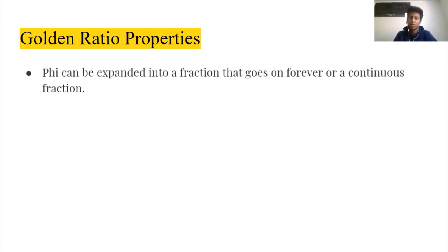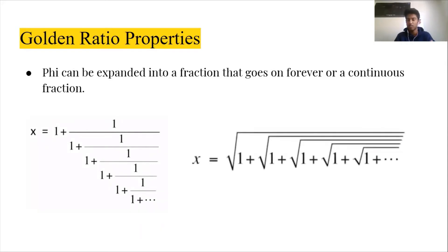So another property that the golden ratio has is that it can be expressed as a continuous fraction. And you might be wondering what a continuous fraction is. And this is a continuous fraction. So if we compute this, we actually get the golden ratio. And the further we go down this fraction, the more and more accurate representation of phi we get. Another representation of the golden ratio is this. And again, the further you go, the more accurate representation of phi you get.